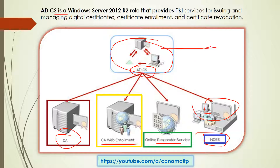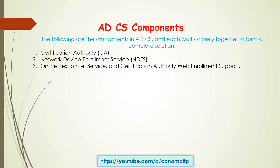Active Directory Certificate Services provides PKI services for issuing and managing digital certificates, certificate enrollment, and certificate revocation. Each function has its own separate role — enrollment, revocation, and a couple of other things. Now you have to understand what the components of Active Directory Certificate Services are.